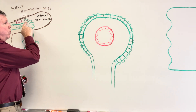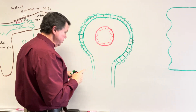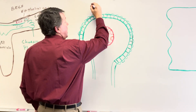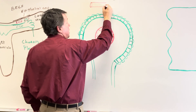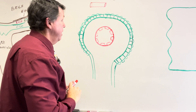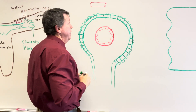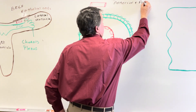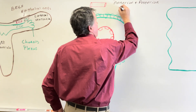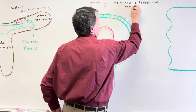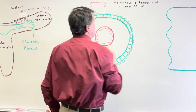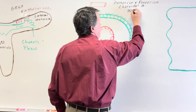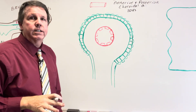We've blown up this portion to take a closer look. The blood supply to the choroid plexus is done by two different arteries: the anterior and posterior choroidal arteries. The blood flow through this is about 10 times greater than the blood flow through the rest of the cerebral arteries.